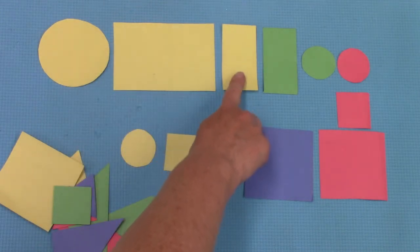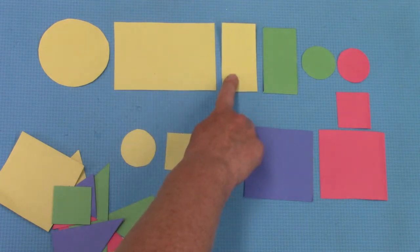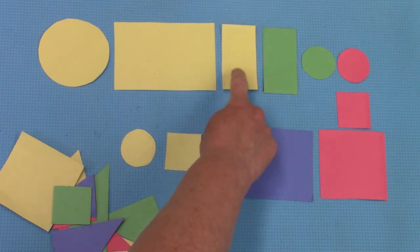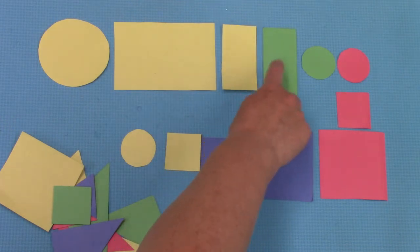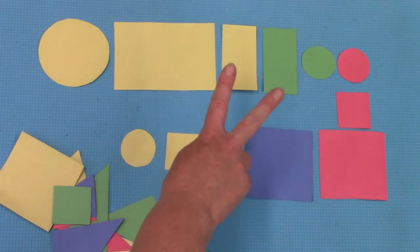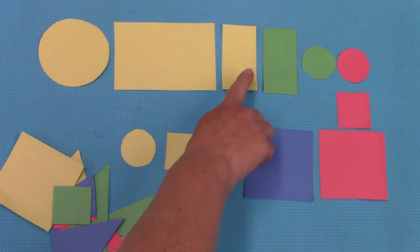Yellow, yellow. Rectangle, rectangle. How are they different? Size. Small, small. Rectangle, rectangle. They're the same in two ways but they're different in one way: color.